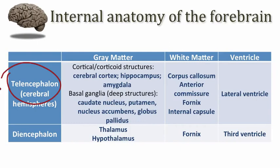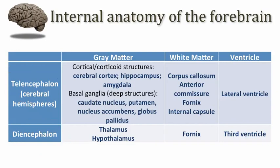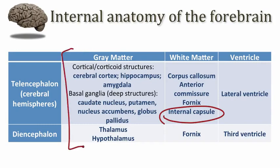Just inferior and a bit caudal, we have the diencephalon. What I want you to be able to do is consider the various derivatives of the embryological telencephalon and diencephalon. Mainly, we're going to focus on one bit of white matter called the internal capsule and the relationship of these gray matter structures relative to the different components of that internal capsule.